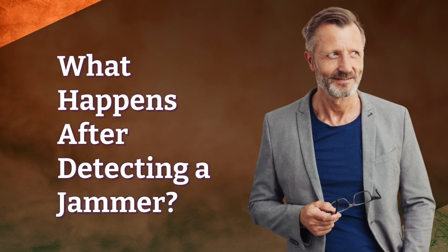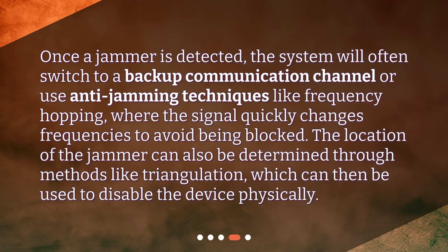What happens after detecting a jammer? Once a jammer is detected, the system will often switch to a backup communication channel or use anti-jamming techniques like frequency hopping, where the signal quickly changes frequencies to avoid being blocked. The location of the jammer can also be determined through methods like triangulation, which can then be used to disable the device physically.